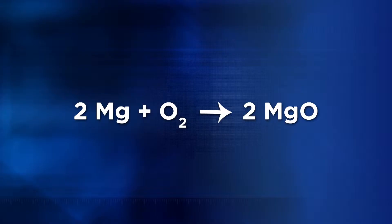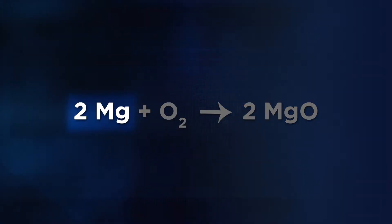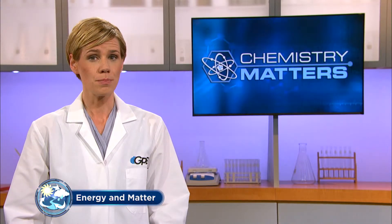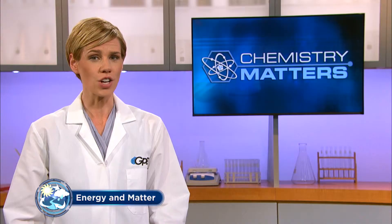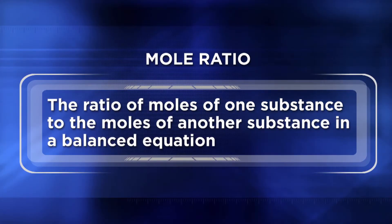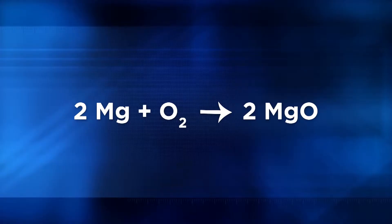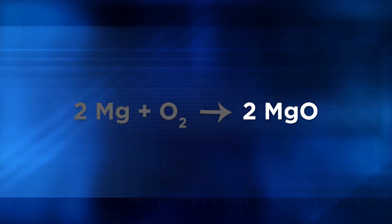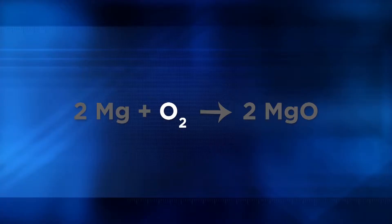For example, take the following reaction: two moles of magnesium react with one mole of oxygen to produce two moles of magnesium oxide. There are several relationships that I could observe by just looking at these coefficients, which are often called mole ratios. A mole ratio is the ratio of moles of one substance to the moles of another substance in a balanced equation. For instance, I can look at this reaction and say for every two moles of magnesium that react, two moles of magnesium oxide are produced. I can also say that for every two moles of magnesium that react, one mole of oxygen is required.